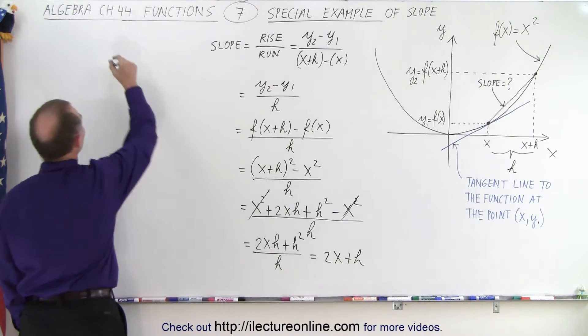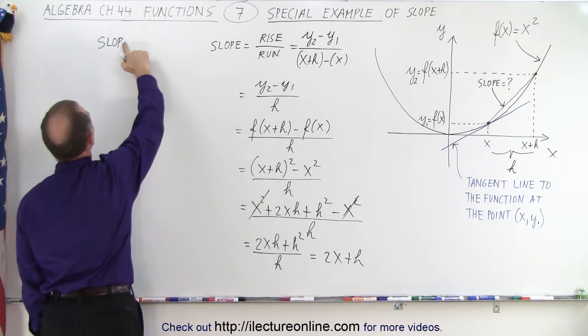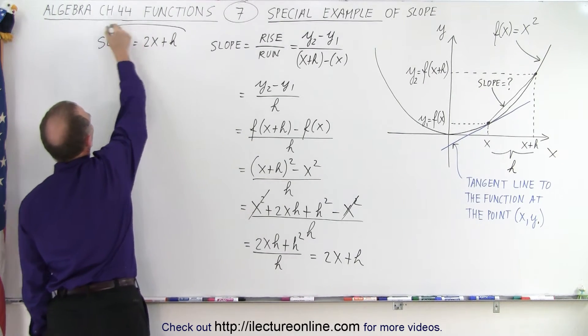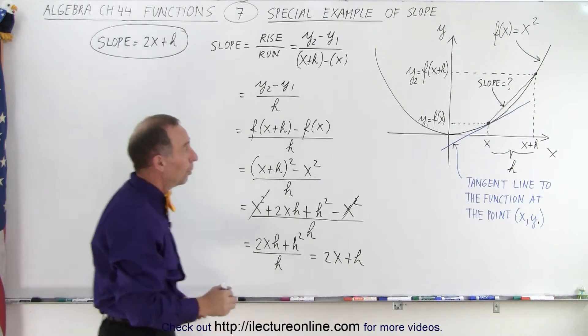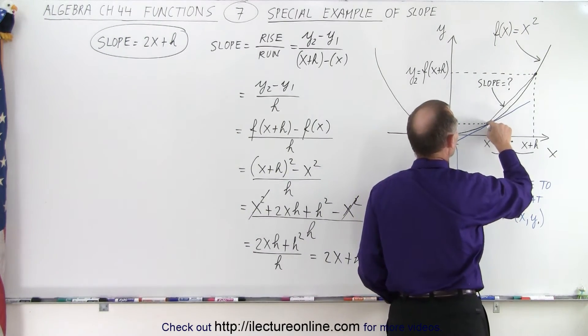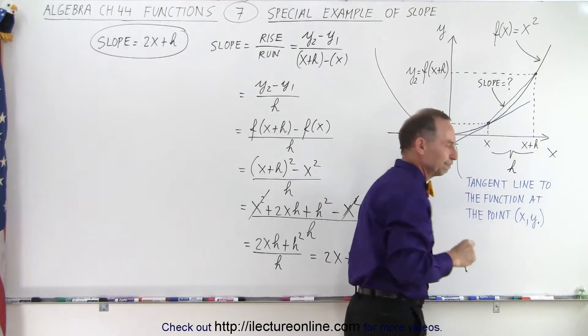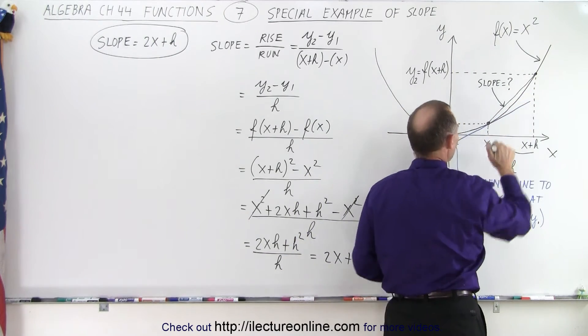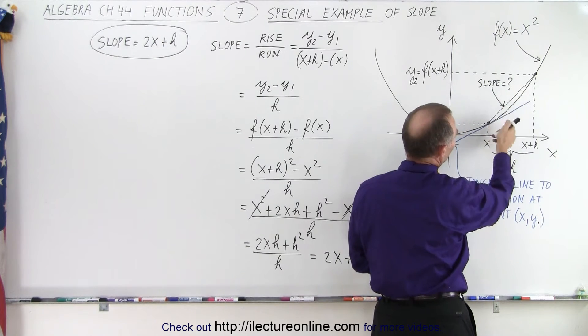So essentially what we found here was that the slope is equal to 2x + h. Now at this point we may not realize what that means, which is okay, but that is the slope of the line going from any arbitrary point here to any other point a distance h away from the first point. So it equals the slope over here. Now you can see that this slope is by no means the same as the tangent line slope over here.